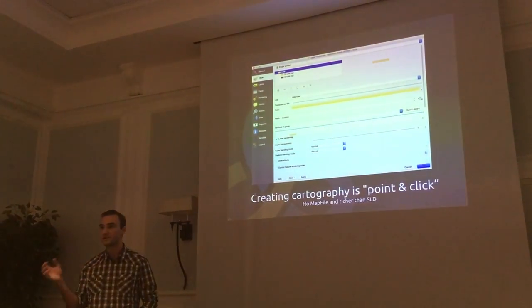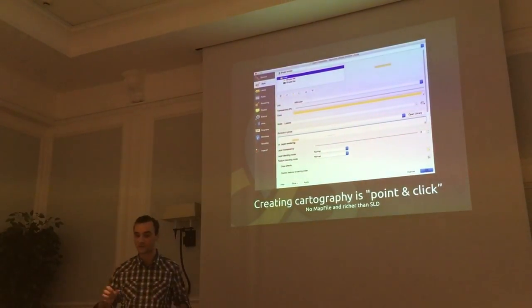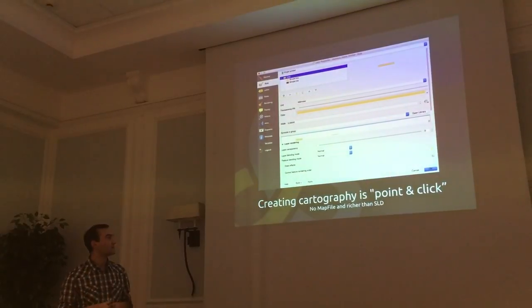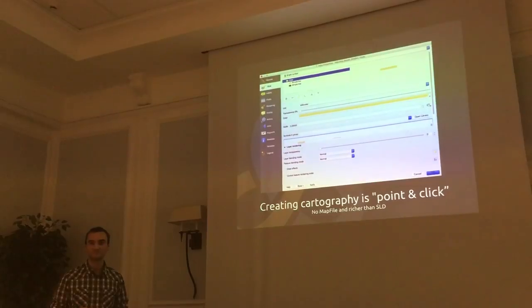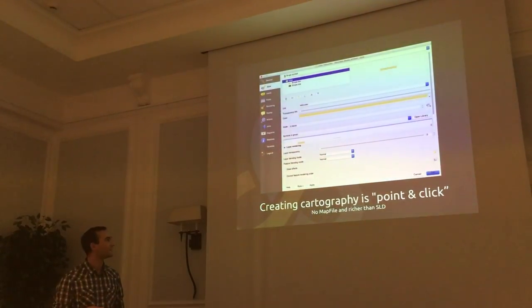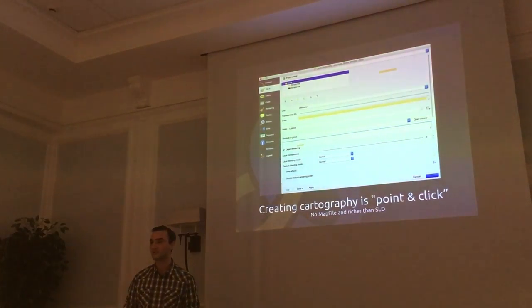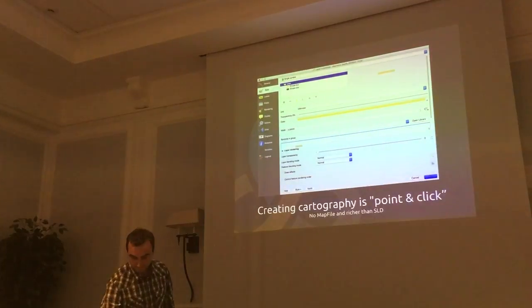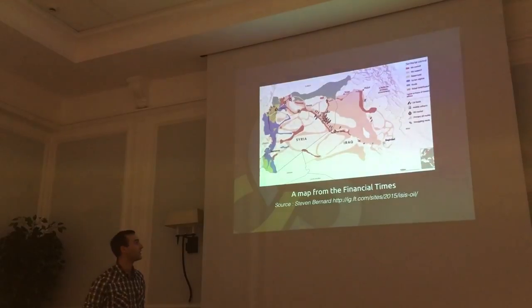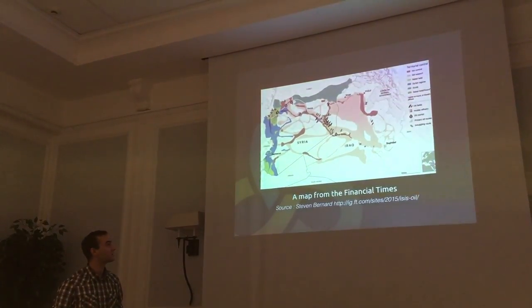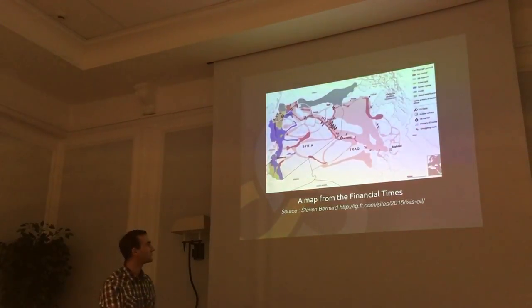Everything is point and click, available in the QGIS desktop UI. There is no map file to write, and we can export this style as SLD, though unfortunately it is not as powerful as the QGIS file for styling. This is an example of a map made at the Financial Times — they are using QGIS in production, and it's nice styling.